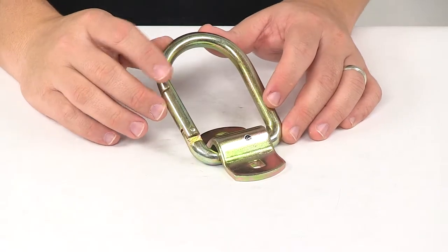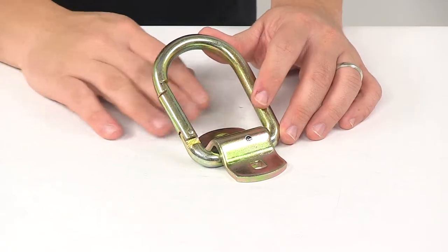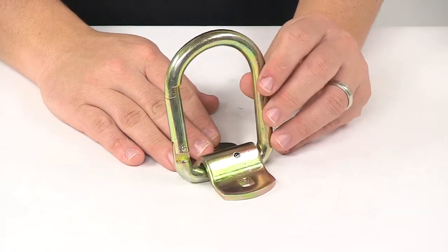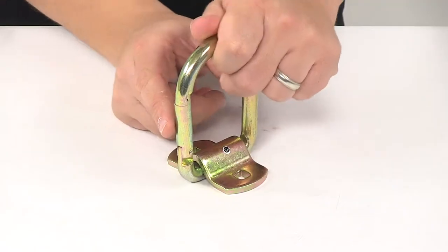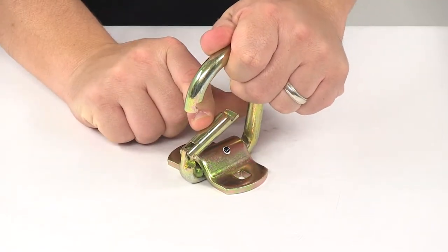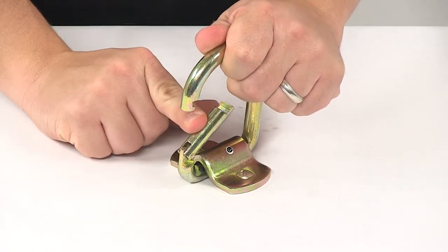Today we're taking a look at the Cargo Smart latching D-ring tie-down anchor. Now this D-ring adds an extra anchor point for your trailer, truck, or van. The latch mechanism located right here allows you to easily secure your tie-down to the D-ring.